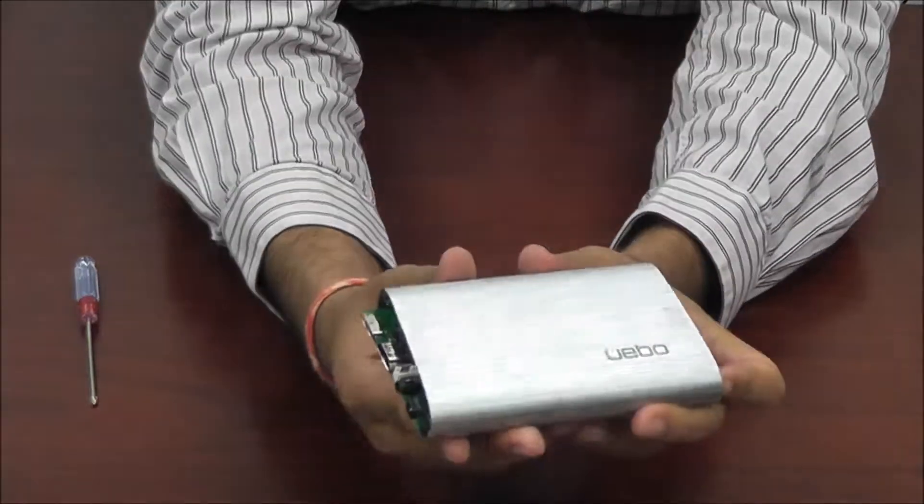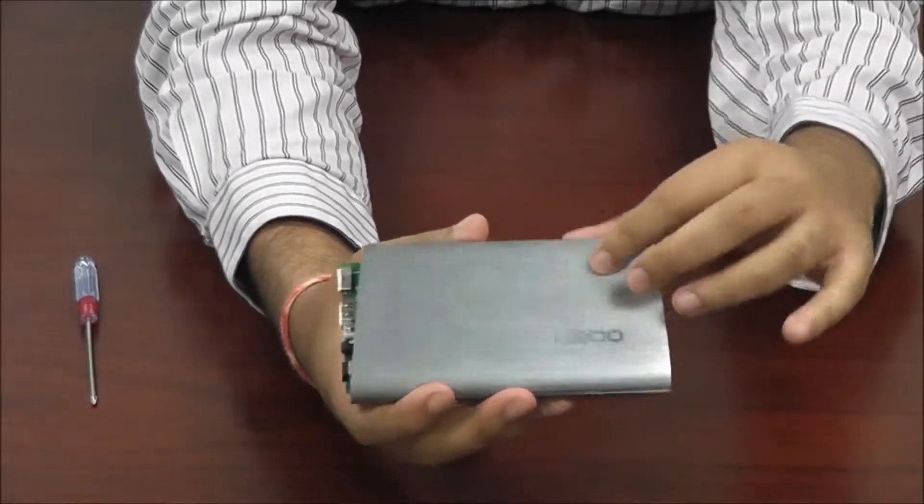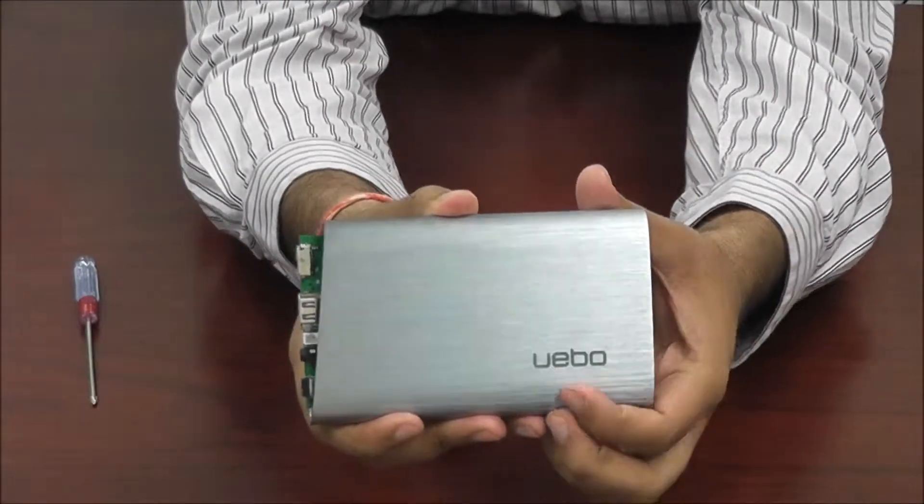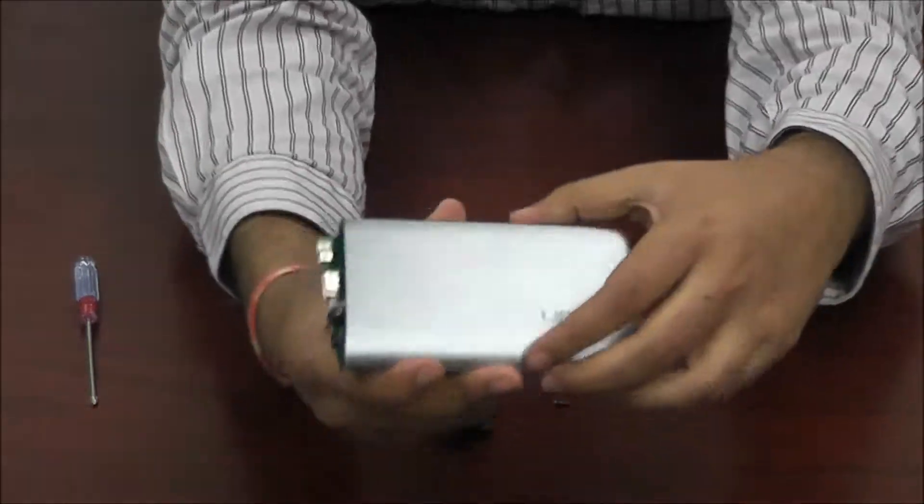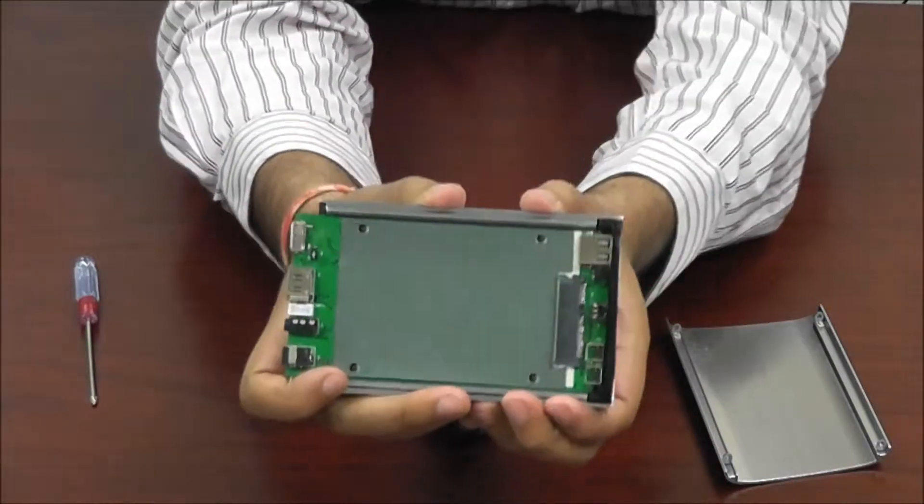And the next thing you got to do with the M100 is you're gonna take off the top metal casing and you want to take off the one with a Yuba logo on it. So remove that casing and that's where you'll see the inside of the M100.